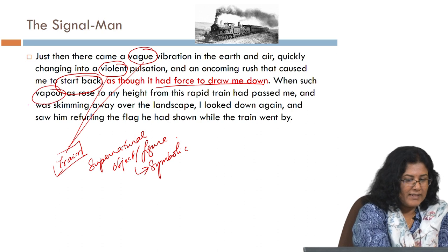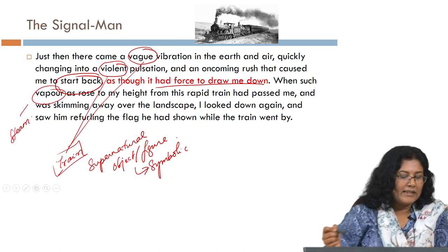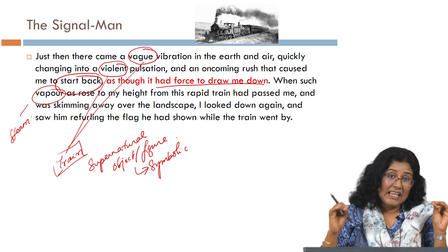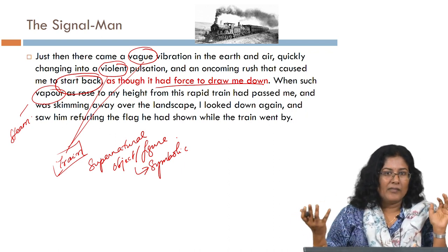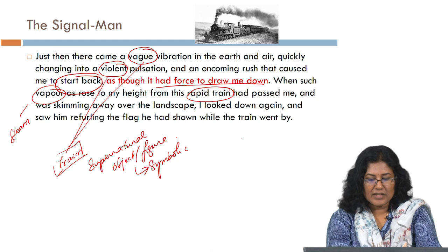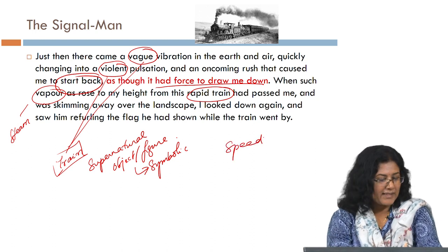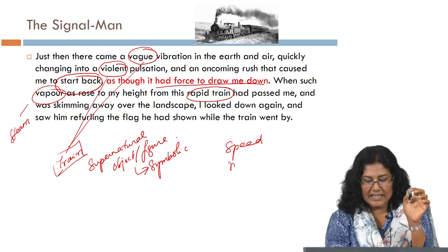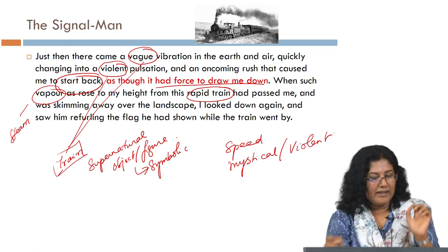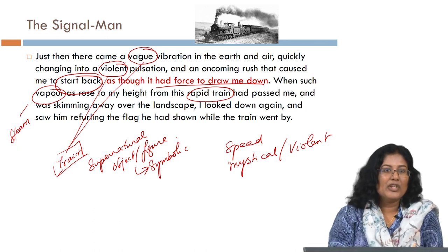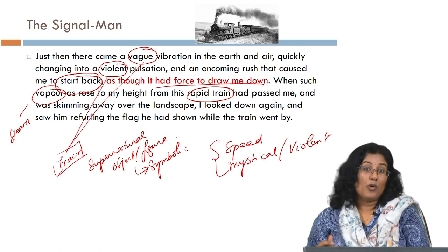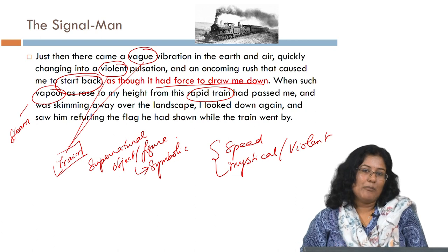Notice the word 'vapour' — it is the steam coming out of the engine. The train is associated with a lot of speed and something almost mystical in its power. Dickens uses the phrase 'violent pulsation' to describe the train, so we want to come to a conclusion about the anxieties this train embodies for the Victorians.